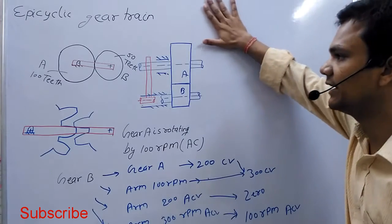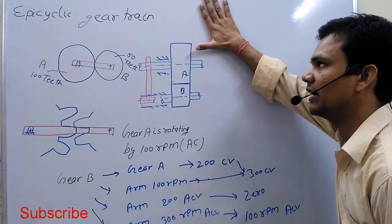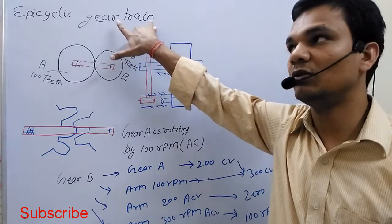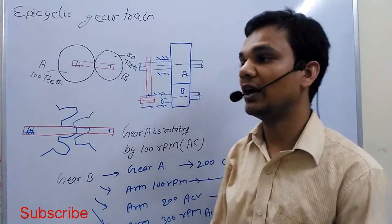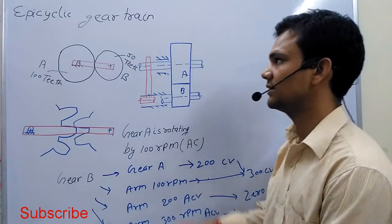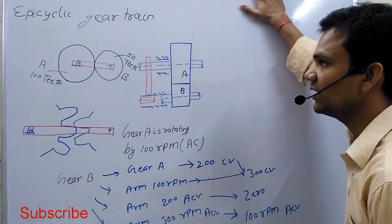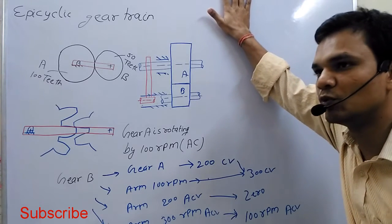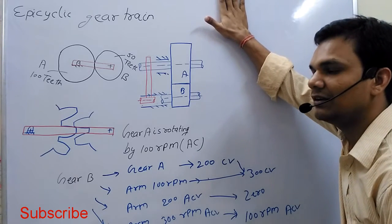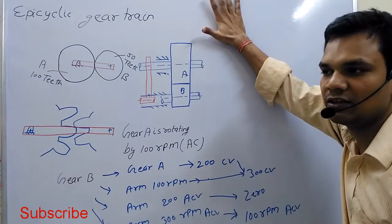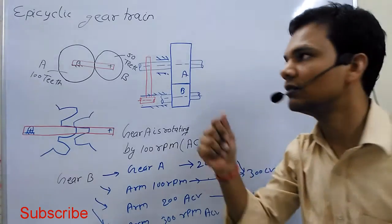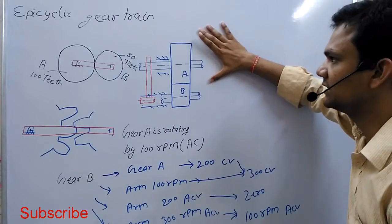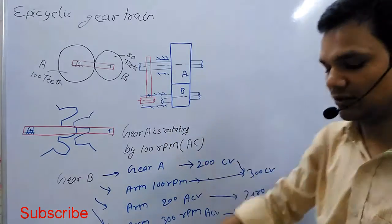Another thing is: what is the degree of freedom of the epicyclic gear train? Degree of freedom is used to convert the unconstrained mechanism into a constrained mechanism. If the degree of freedom is more than one, we control the links equal to the degree of freedom to convert unconstrained motion into constrained motion.